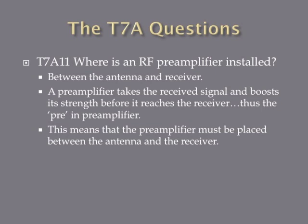Where is an RF preamplifier installed? An RF preamplifier is installed between the antenna and the receiver. When your antenna picks up a radio signal, it's often very weak, so the antenna passes it through a preamplifier that boosts the signal strength before it reaches the actual receiver. Because it comes before the receiver, that's the 'pre' in preamplifier. It takes the signal from the antenna, boosts its strength, and then sends that signal to the receiver.